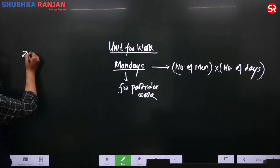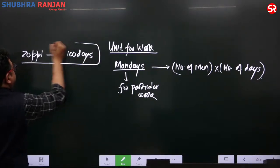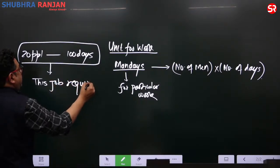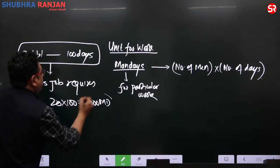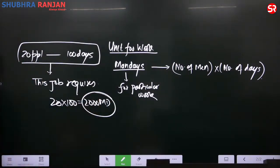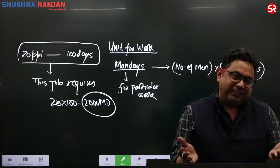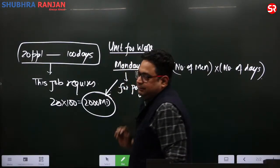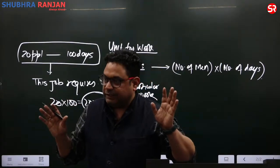When I say 20 people finish a job in 100 days, I am specifically telling you this job requires 20 into 100, which is 2000 man days of work. For a particular job, man days is constant. One work has to be finished and this work requires 2000 man days — 20 people, 100 days, 20 into 100 equals 2000 man days.